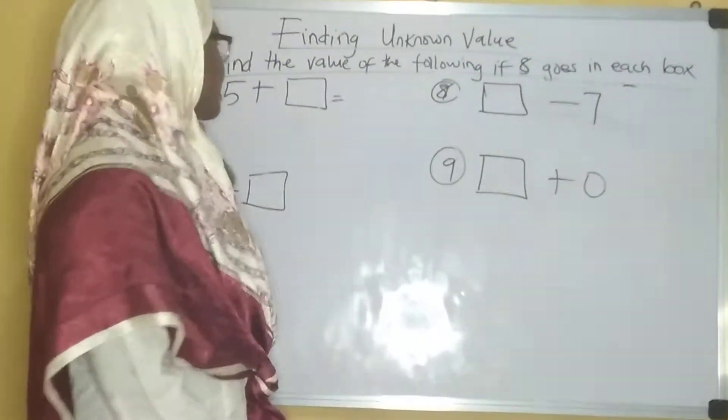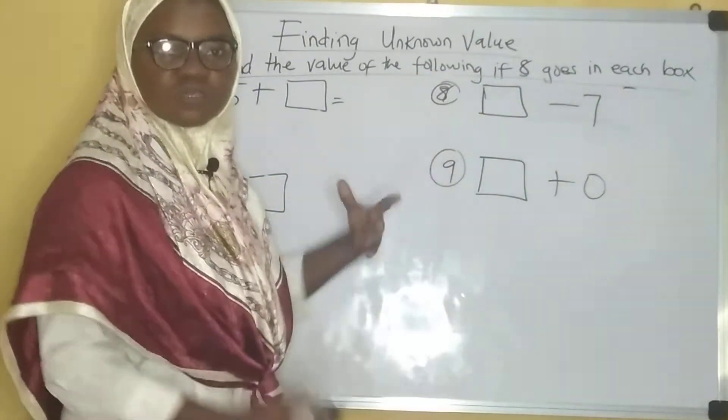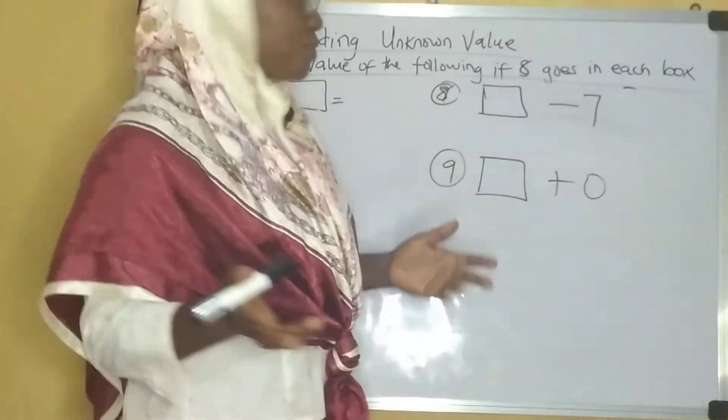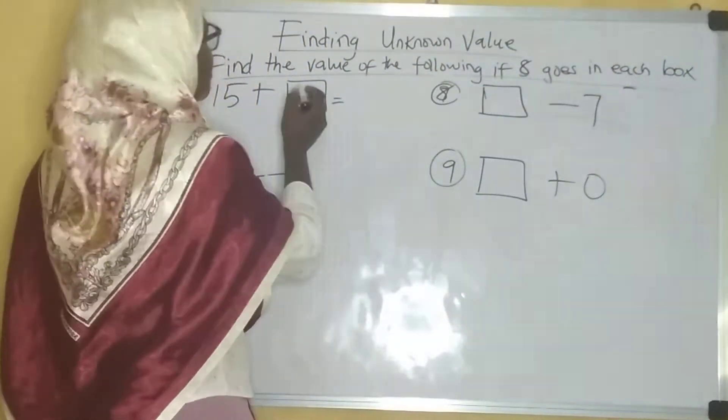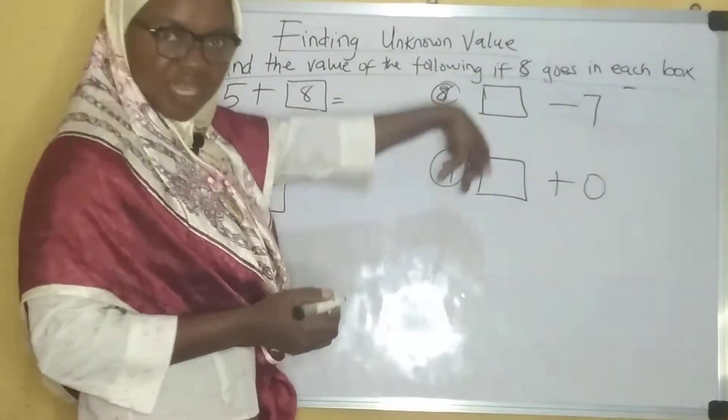Let's look at these other examples. We want to put eight in each of the boxes to see what the corresponding values will be after calculation. But before we proceed, let us put the eight in each of the boxes first. I'm going to put eight, eight, and eight because that's the instruction.